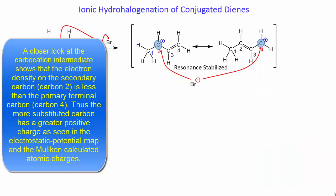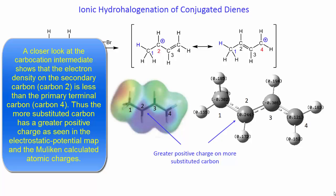A closer look at the carbocation intermediate shows that the electron density on the secondary carbon, carbon 2, is less than the primary terminal carbon, carbon 4. Thus, the more substituted carbon has a greater positive charge, as seen in the electrostatic potential map and the Mulliken calculated atomic charges.